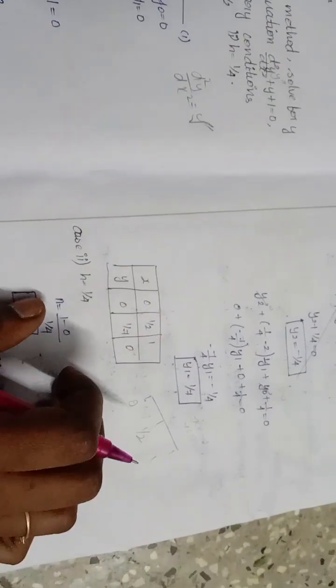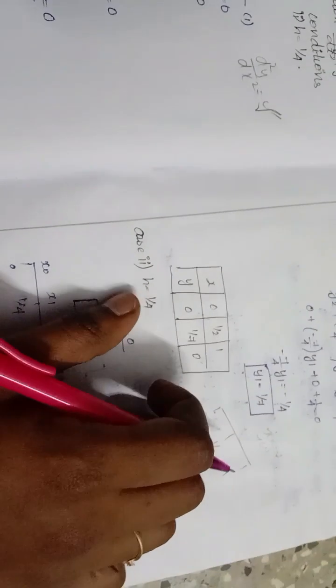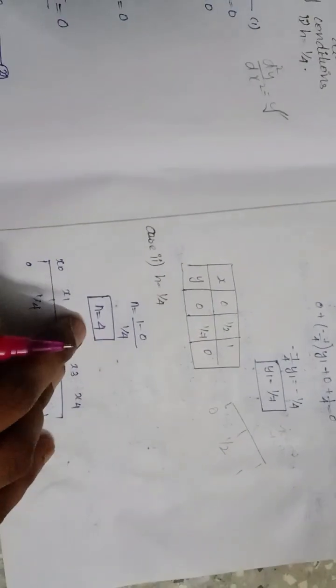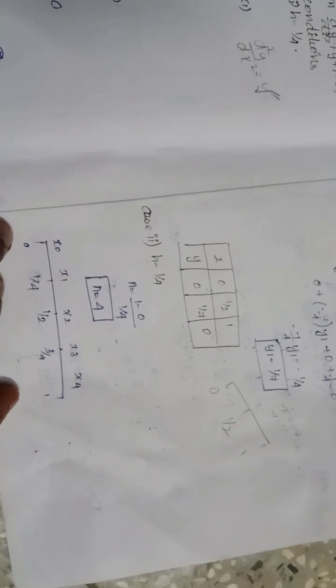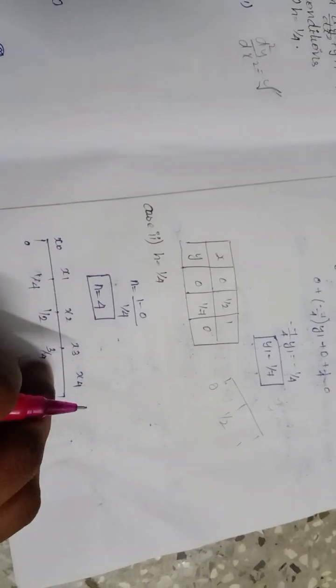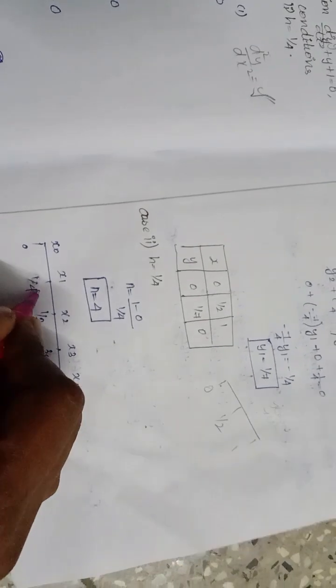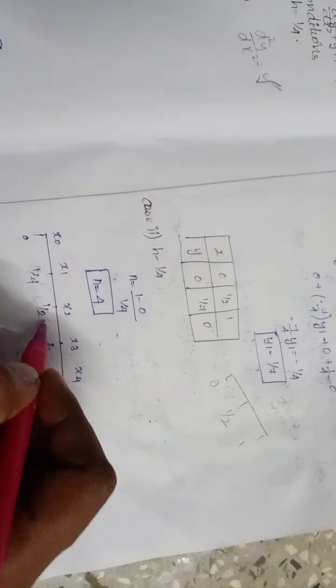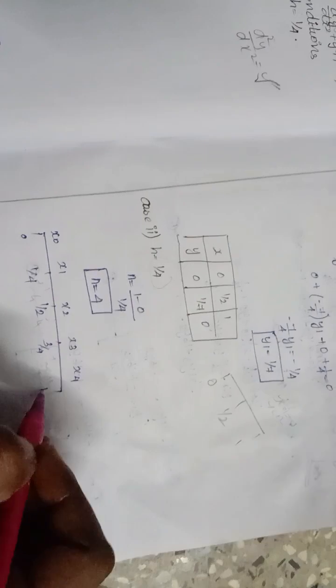Moving to Case 2: h = 1/4. Now n = (1 - 0) / (1/4) = 4, so there are 4 intervals with points x₀, x₁, x₂, x₃, x₄. The x-values are 0, 1/4, 1/2, 3/4, and 1.